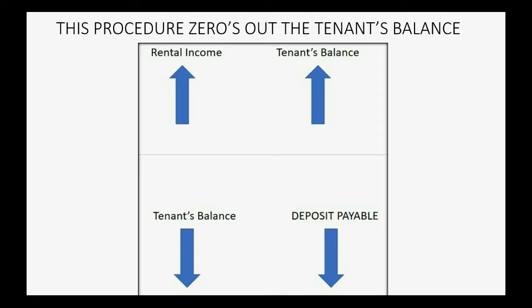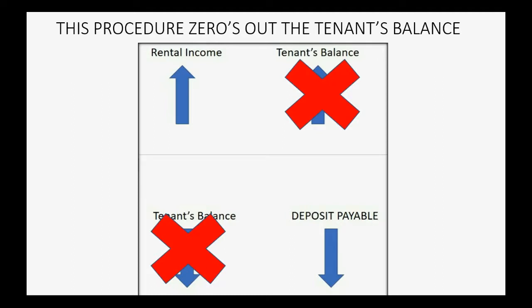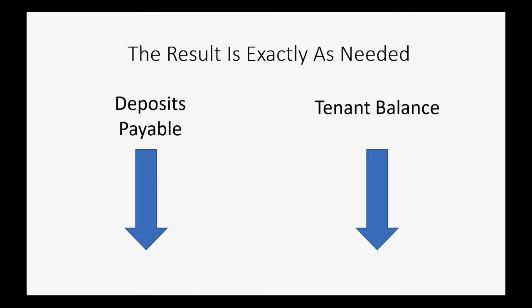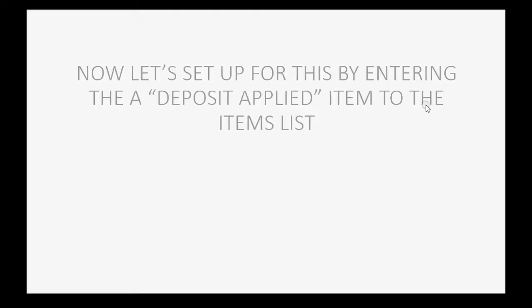When you do the tenant's last month's rent, rental income and the tenant's balance go up. When you apply the deposit, the tenant's balance and deposit payable go down. The end result is exactly what you need: you earn the last month's rent but no longer owe the money back to the tenant. Both the tenant's deposit and the tenant's balance will go down under this method.